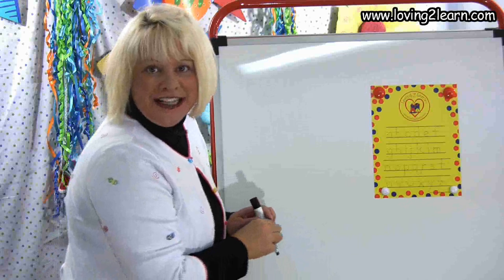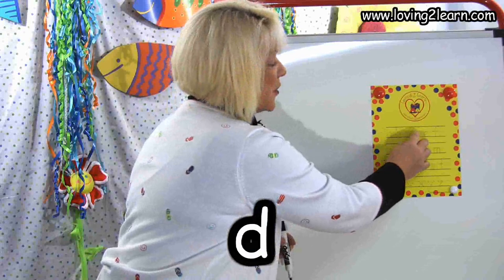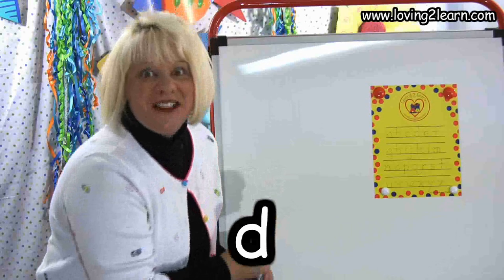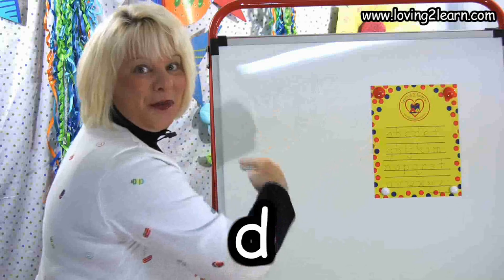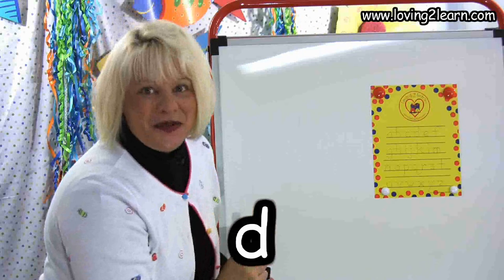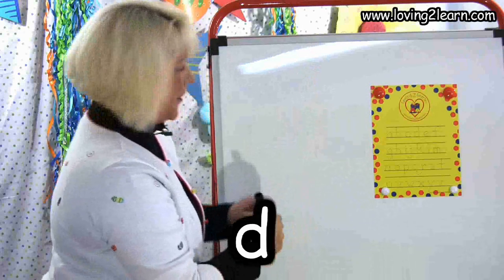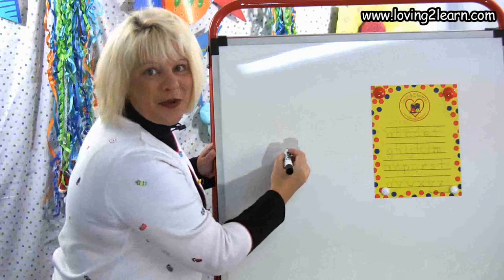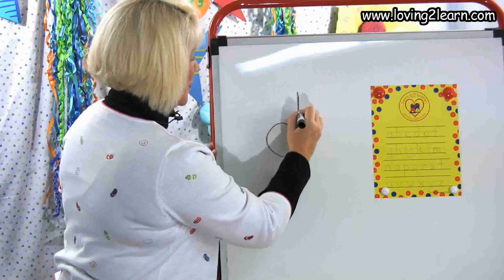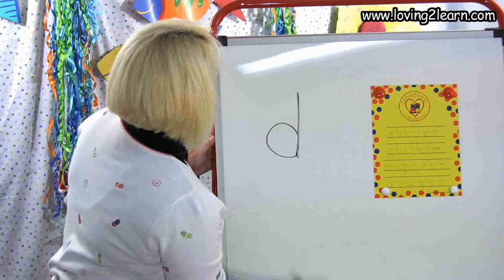The next small letter is the letter D. For the letter D, we circle around the bottom, straight line up, straight line down. Let's do it in the air: circle around the bottom, straight line up, straight line down. Let's do it on the whiteboard: circle around the bottom, straight line up, straight line down. There's the letter D.